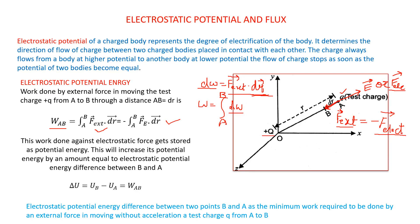We are moving the charge inside the electric field of plus Q. At point A there will be some potential energy of the charge due to the electric field, and there will also be some potential energy at point B. The potential energy difference between point B and A equals the amount of work done, because whatever work is done against the electric field gets stored as potential energy. So, electrostatic potential energy difference between two points B and A is the minimum work required by an external force in moving without acceleration a test charge q from A to B in the electrostatic field of charge plus Q.